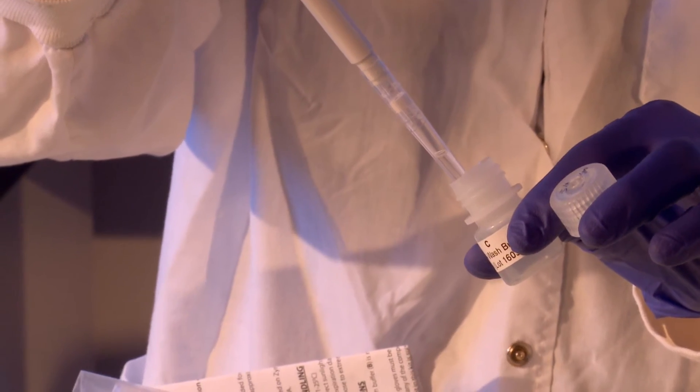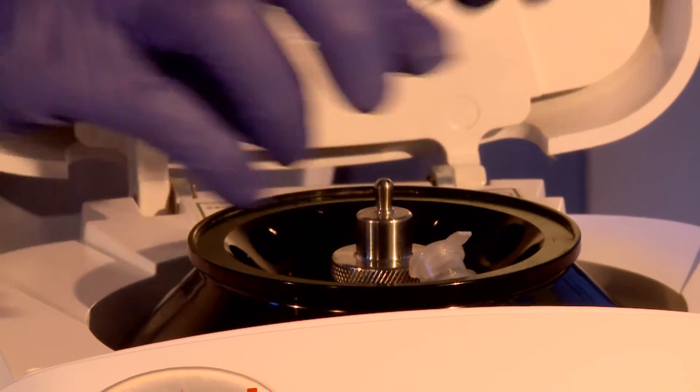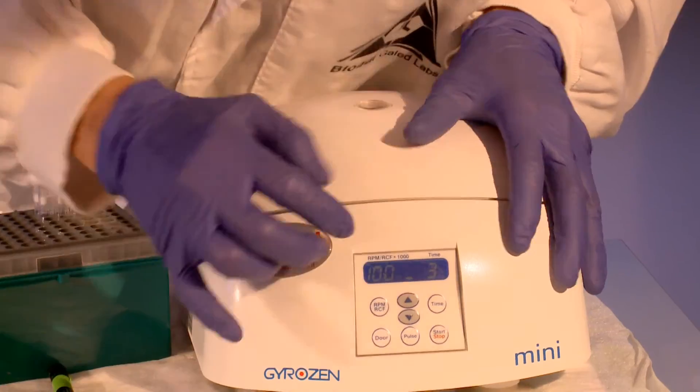Add 500 microliters of buffer C to the spin column and centrifuge at 10,000 G for 3 minutes.